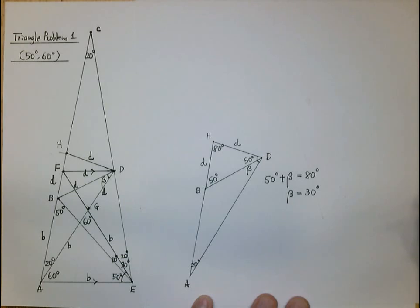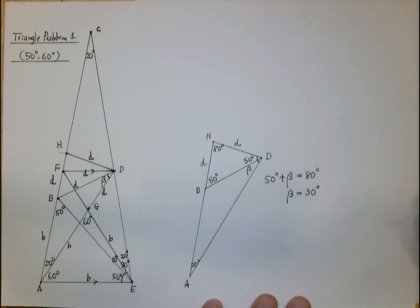And that concludes the solution for triangle problem number one. In the second video, we're going to solve triangle problem number two, which is a variation of the original problem, with 60 degrees and 70 degrees formed by the segments inside the triangle with the base of the triangle. Thank you.